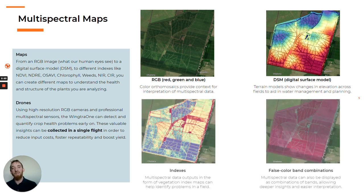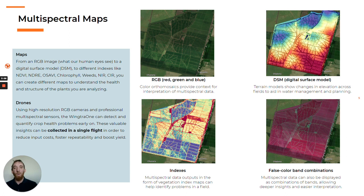With a multispectral camera you will be able to get more information on the same flight, since the camera is capturing in RGB plus more spectral bands that are not perceivable with the human eye every time it triggers. While indexes give you precise information about crops, false color band combinations can tell you which plants are dead or highly stressed.